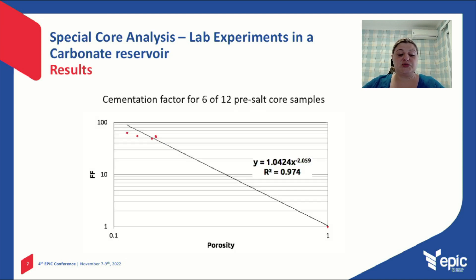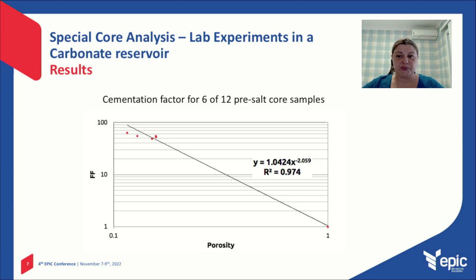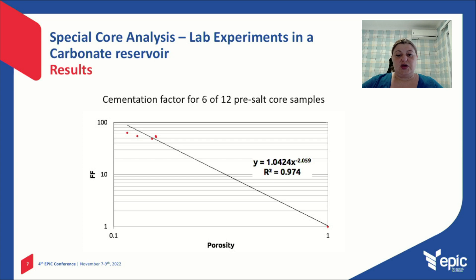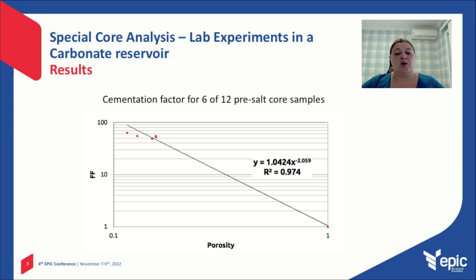These are the results from resistivity measurements of 6 out of 12 samples. This graphic shows the log-log plot of the formation factor versus porosity from the resistivity measurements. From this plot, we can obtain the cementation factor, which is the Archie m factor. This value is obtained as the slope coefficient of the line connecting the data to the bulk fluid values. For carbonate rocks, this generally presents values close to 2, and the value obtained for these rocks was 2.1.